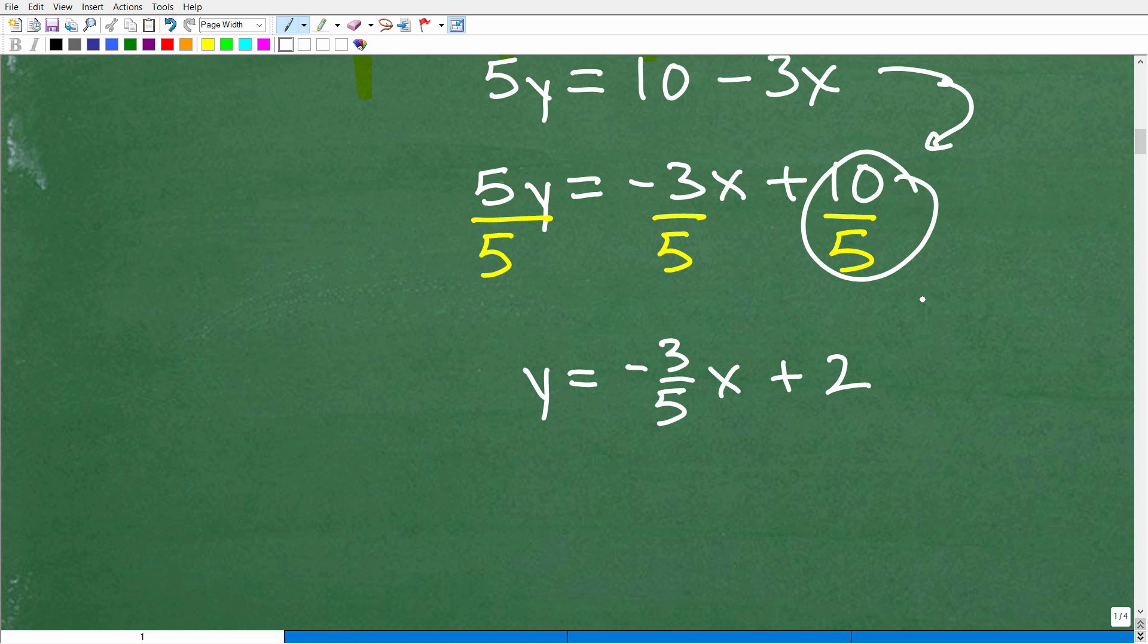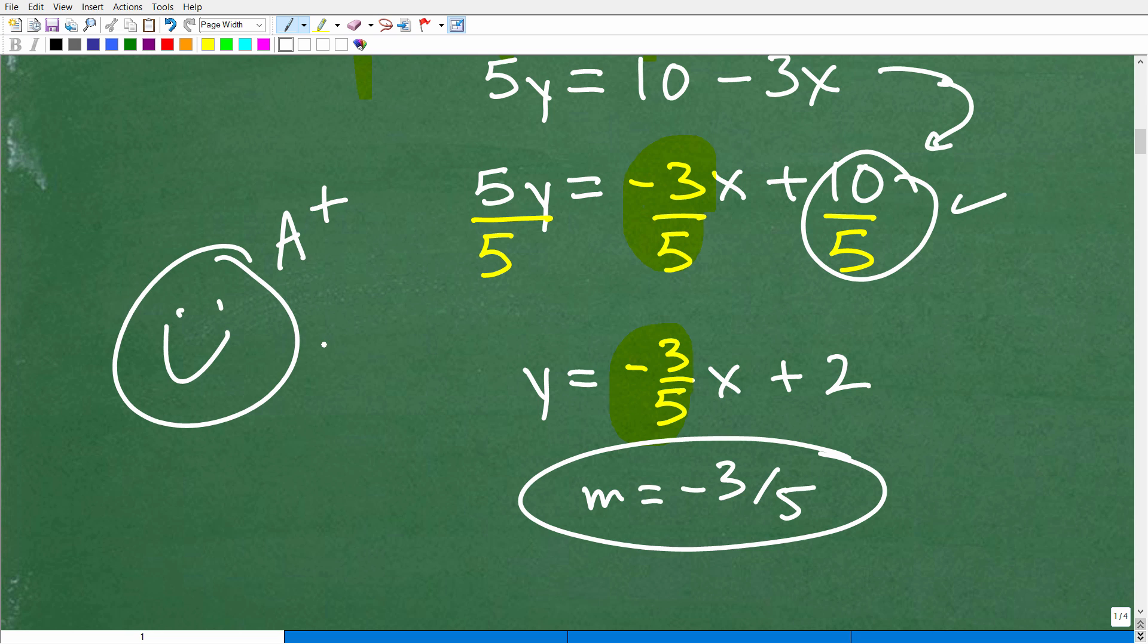And now I get Y equals negative 3/5 X plus 2. Now, this is the Y-intercept. That's not important in this particular problem. What I need to know is this number in front of X. It is negative 3/5, and what does that represent? Well, that is the slope. The slope of this line is negative 3/5. And if you got that right, then I must give you a nice, super happy face with an A plus, 100%. I'll give you 2, 3 stars to make you feel extra special. Nice job.